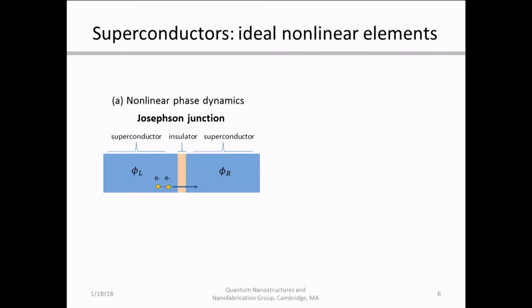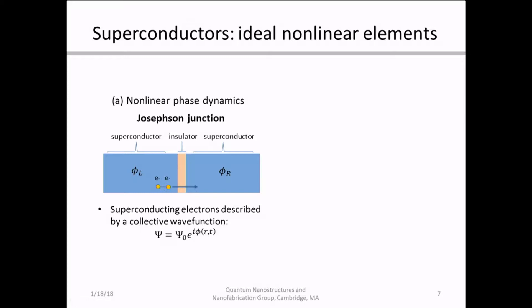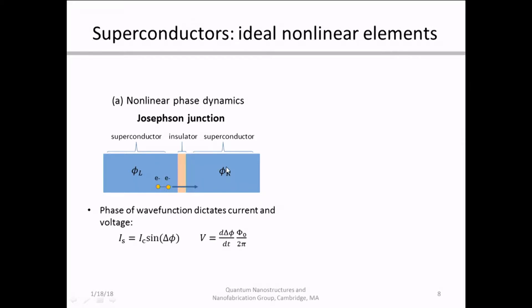As a result, the paired superconducting electrons, or Cooper pairs, can tunnel through that barrier. In superconductors, the electrons can be described together by a collective wave function, which is described by a phase. As a result of that insulating barrier, you end up with a phase difference on either side of that barrier, shown here as phi_L and phi_R. In a Josephson junction, the phase difference between the two defines both the current and the voltage through the device, as shown with the two constitutive equations. We call that the current-phase relationship, and there is a sinusoidal relationship between the current and the phase difference in the Josephson junction.